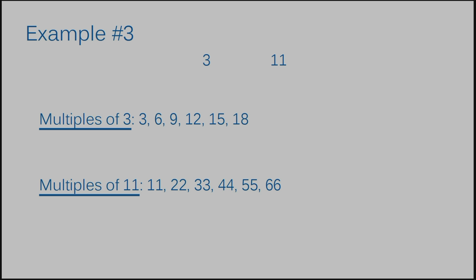We have a problem — those two lists have no numbers in common. Does that mean there is no least common multiple? Definitely not. There will always be a least common multiple between any set of numbers. The issue is that we haven't listed enough multiples. The multiples of three stopped at 18 while the multiples of 11 go up to 66, so I need to write more multiples of three: 21, 24, 27, 30, and 33. And yes, there we have our common multiple — it's 33.